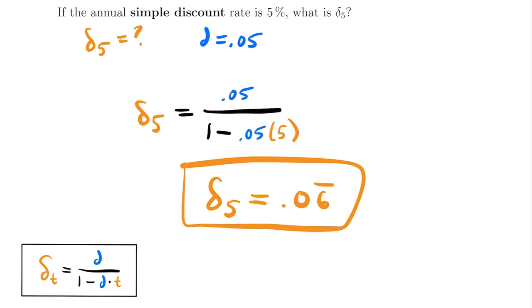That was the last example for the last conversion formula in this video. Hopefully you found this comprehensive overview of conversion formulas for interest rates helpful. If you want to see more complicated examples, feel free to check out our examples video linked at the end of this video and in the description below. If you have any questions, feel free to leave those in the comments. I'll see you next time.